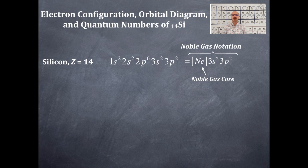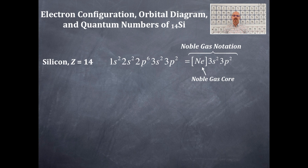Hopefully your professor or instructor will allow you to do the same. The other thing we need to get is the number of valence electrons. The definition for valence electrons: they are the outermost electrons of the largest principal quantum number — s and p orbital electrons only. I'm going to find the largest principal quantum number: I have a 1, a 2, or a 3, so the largest principal quantum number is 3. Then it's the s and p electrons of that largest principal quantum number, which is 3s2 and 3p2.